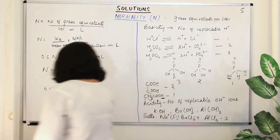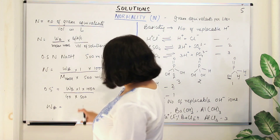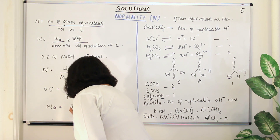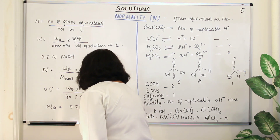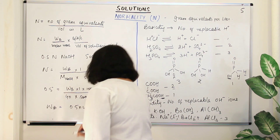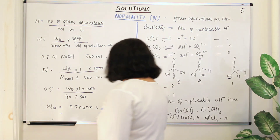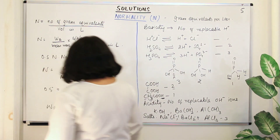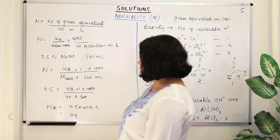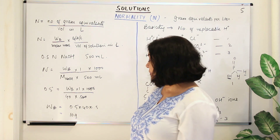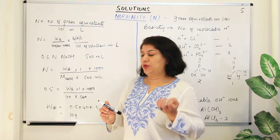Solving for WB: WB = 0.5 × 40 × 0.5 = 10 grams. So you need 10 grams of solid sodium hydroxide pellets to prepare 500 mL of 0.5 N NaOH solution.